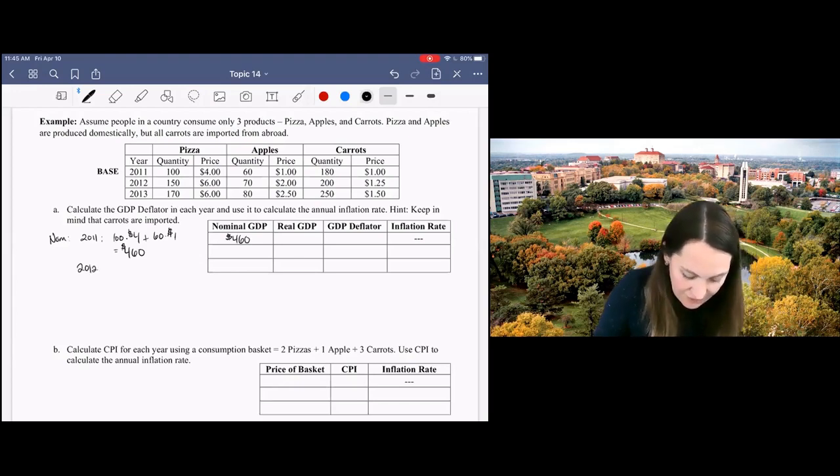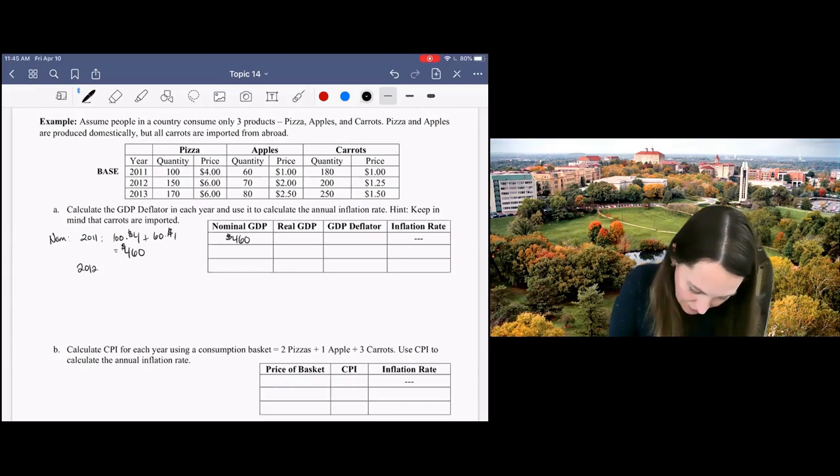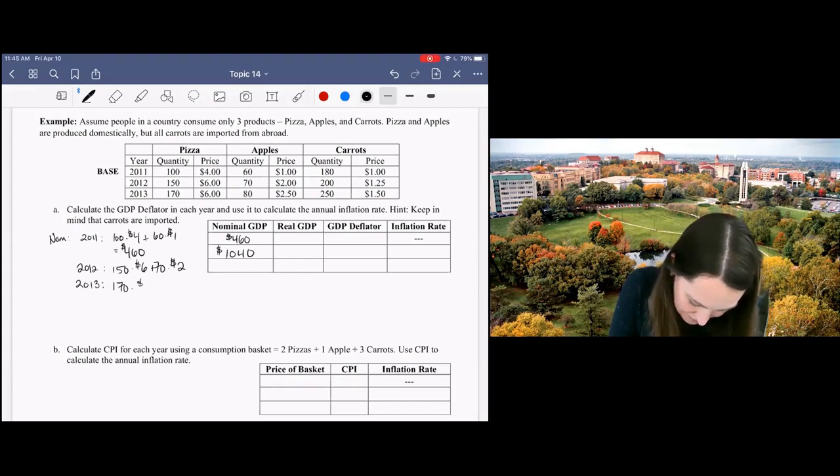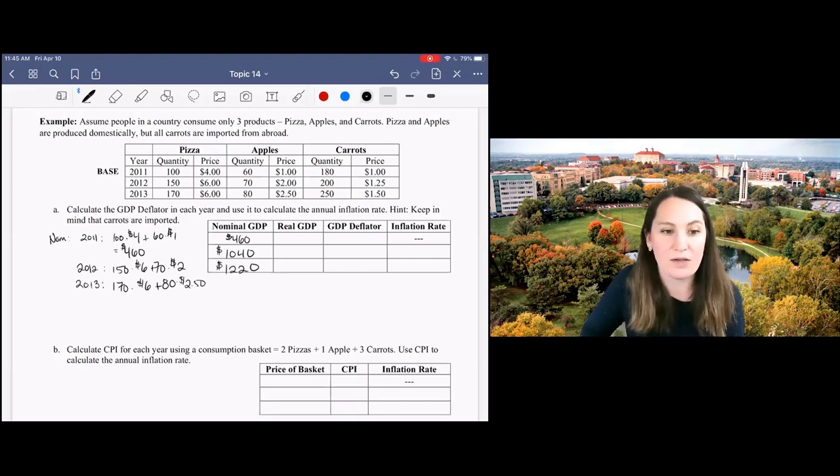For 2012 we've got 150 times $6 plus 70 times $2, which is $1,040. And for 2013 we've got 170 times $6 plus 80 times $2.50, which gives us $1,220.